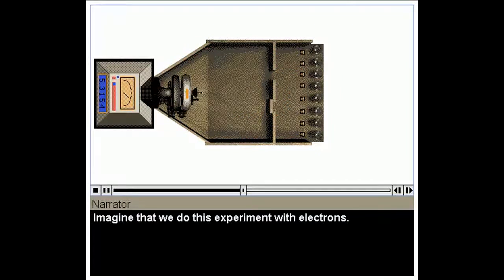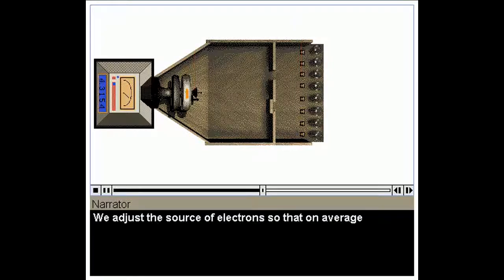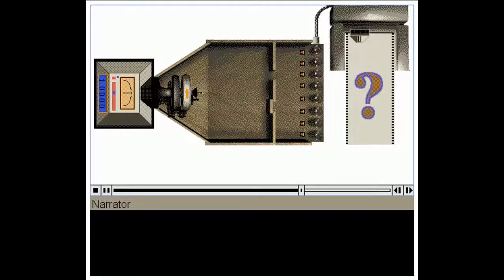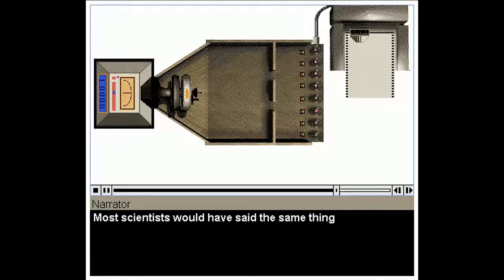Imagine that we do this experiment with electrons. A hot wire emits electrons, and they are counted by detectors at the far end of the apparatus. We adjust the source of electrons so that on average there is only one electron in the apparatus at any given time. When only one door is open, results are similar to both particles and waves. What kind of graph would you expect to see when both doors are open? Remember, only one electron is traveling from source to detector at any one time. If you predicted that the graph would look like the graph for particles, you would be in good company. Most scientists would have said the same thing prior to the advent of quantum theory.